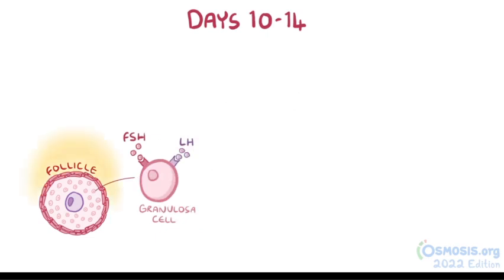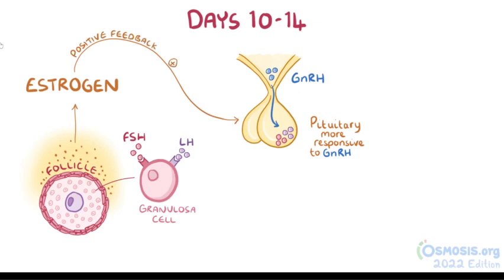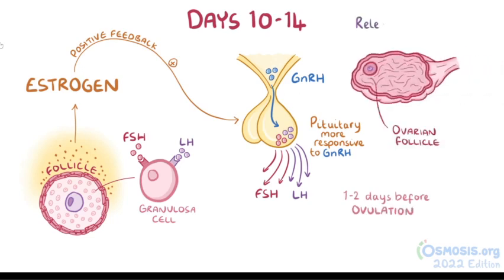This dominant follicle continues to secrete estrogen, and the rising estrogen levels make the pituitary more responsive to the pulsatile action of GnRH from the hypothalamus. As blood estrogen levels start to steadily climb higher and higher, the estrogen from the dominant follicle now becomes a positive feedback signal — it makes the pituitary secrete a large amount of FSH and LH in response to GnRH. This surge of FSH and LH usually happens a day or two before ovulation and is responsible for stimulating the rupture of the ovarian follicle and the release of the oocyte.